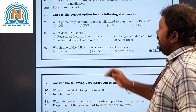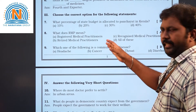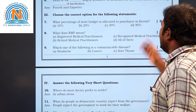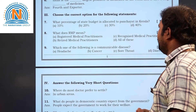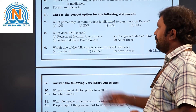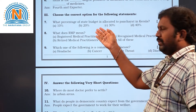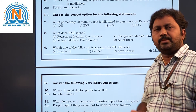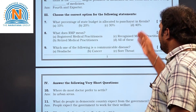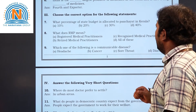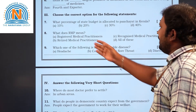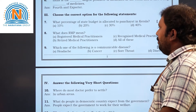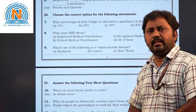Now moving to the choose the correct answer section. Seventh question: what percentage of the state budget is allotted to panchayats in Kerala? The options are 10%, 20%, 30%, and 40%. The correct answer is option D — 40 percent.